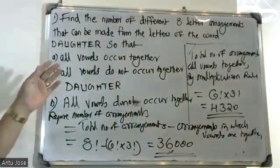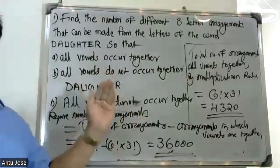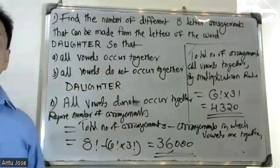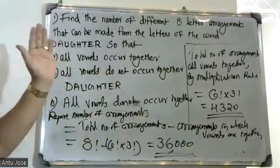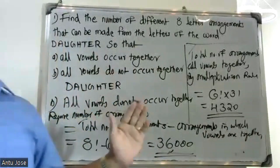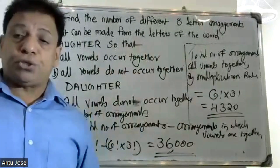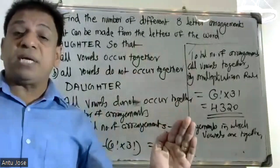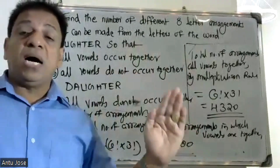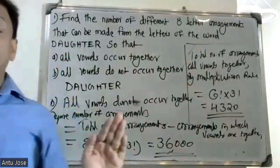To summarize the three answers: use the same approach — total number of arrangements is 8 factorial.